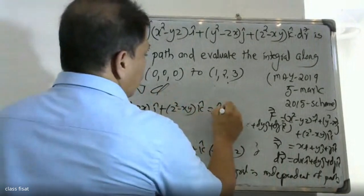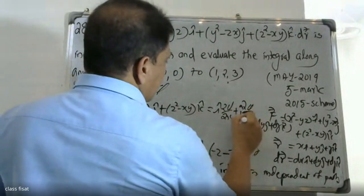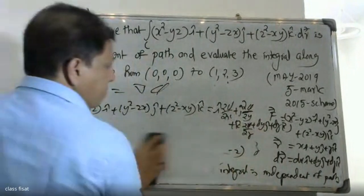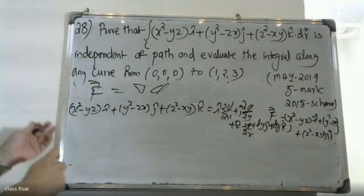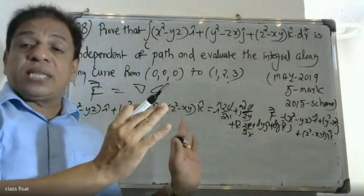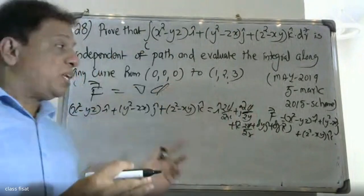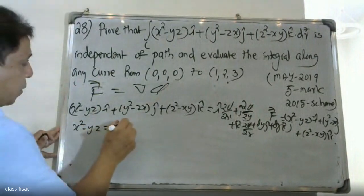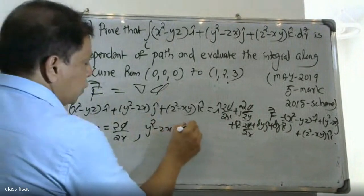We write ∇φ = i·∂φ/∂x + j·∂φ/∂y + k·∂φ/∂z and compare coefficients. So ∂φ/∂x = x² - yz, ∂φ/∂y = y² - zx, and ∂φ/∂z = z² - xy.